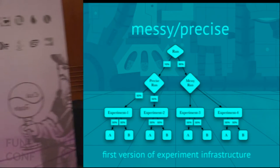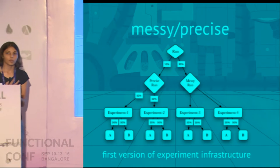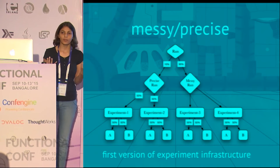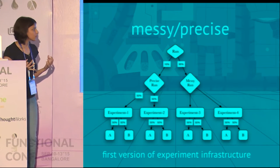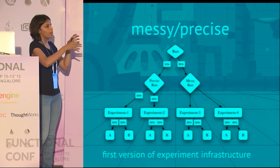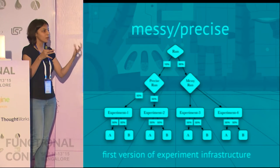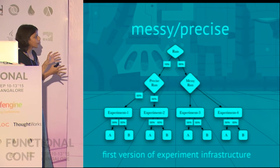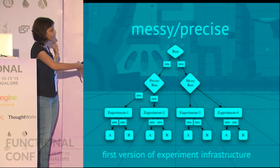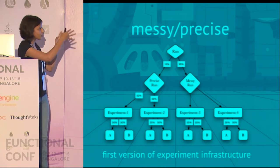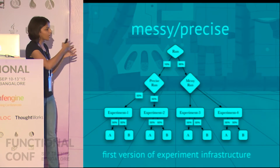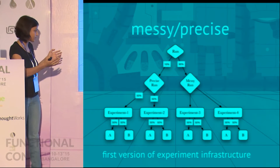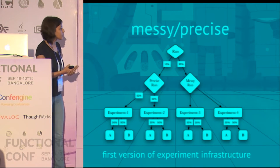This was the first setup we went into production with in our experimentation platform, where we allowed a client to run both messy and precise experiments at the same time. We would split the traffic at the top level into precise and messy. The portions going into precise would be split into other precise experiments, and the portions going into messy would become part of all messy experiments running in parallel.